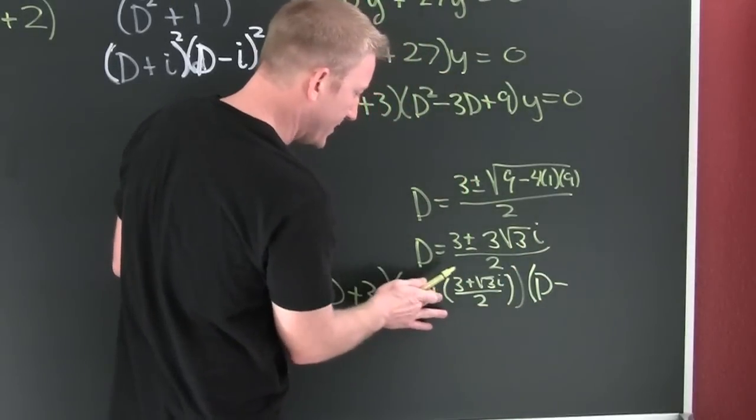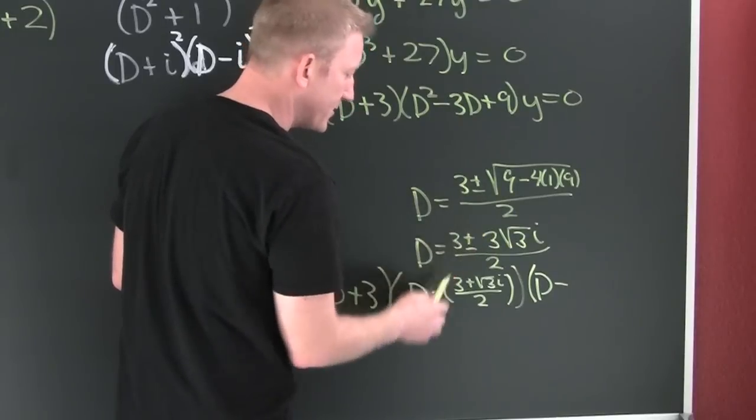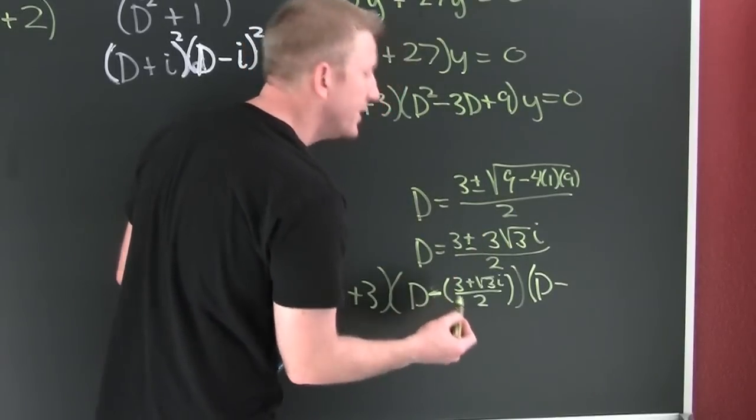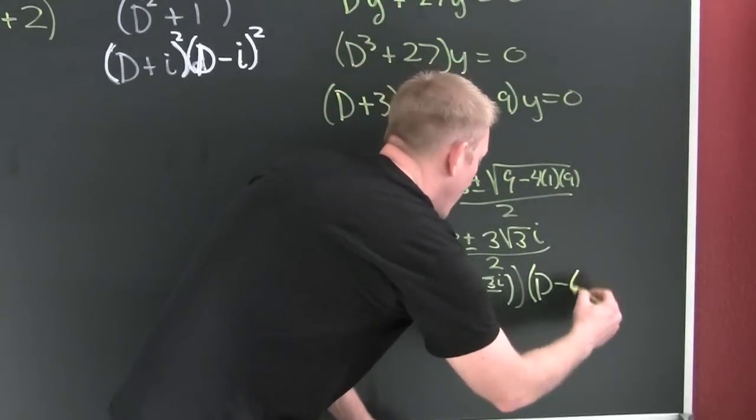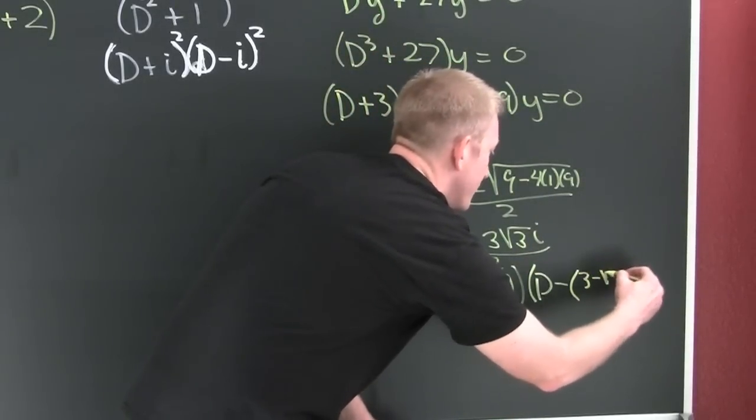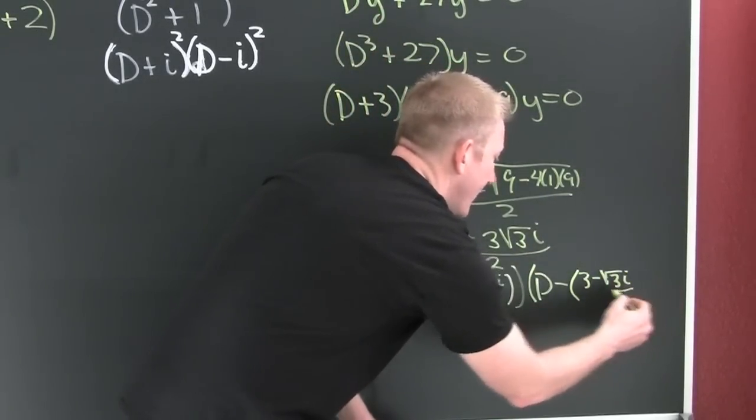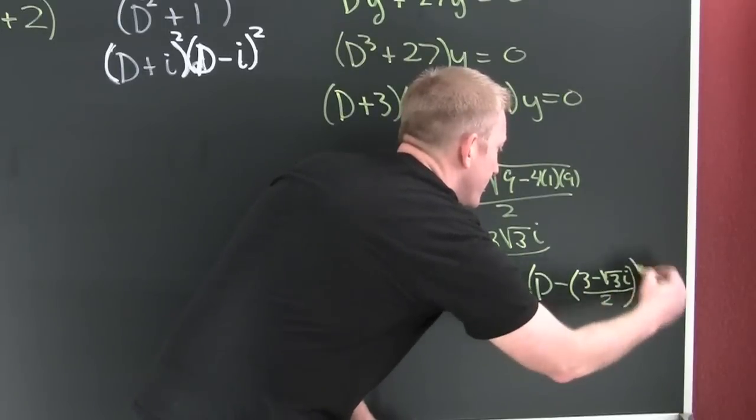This should have been a minus, people. Why? Because if that's a root, then D minus that is a factor. And then D minus three minus root three i over two.